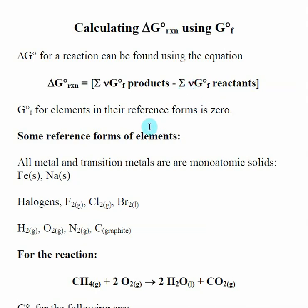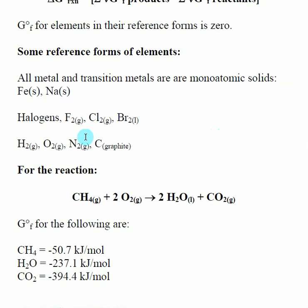So one thing that is a little tricky is you've got to watch out for this: that by convention, the delta G of formation for elements in their reference forms is zero. So sometimes they won't give you the delta G of formation for some species, and that can trip you up a little bit. So what do I mean by reference forms of the elements?